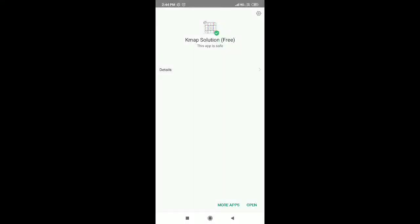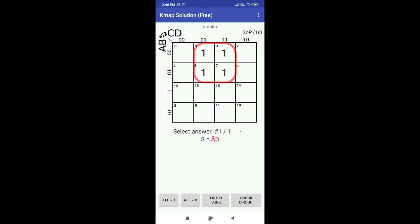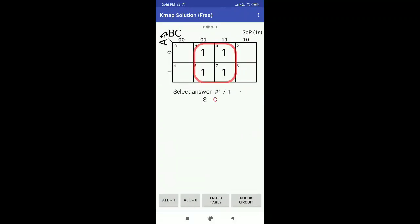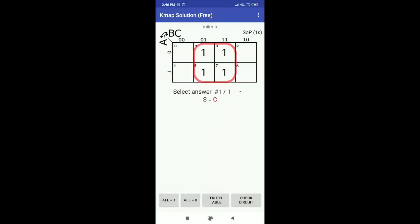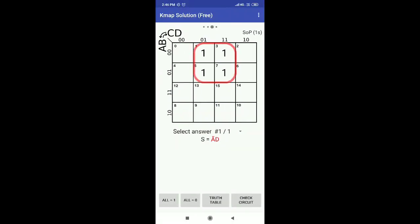Once you open the app, by default it will show you four variable K-map. If you want to use three variable K-map, slide it towards your left. If you want two variable K-map, again slide it towards your left. Two variable, three variable, and four variable K-map are all available.